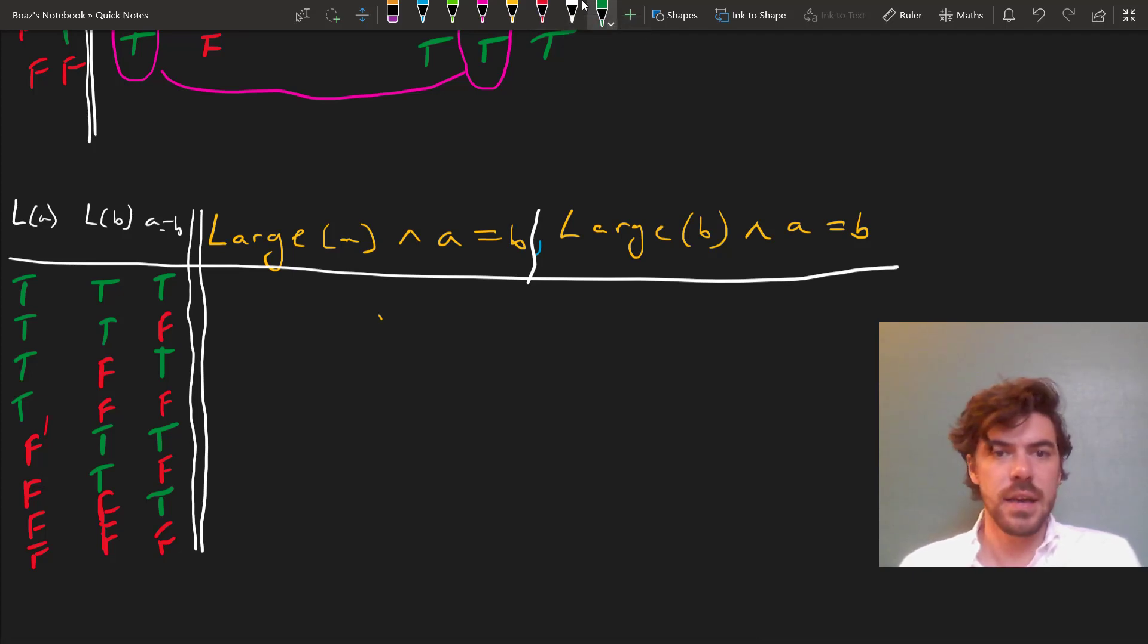Okay, let's assess these then. A equals B is true, and so is large A in the first row, so that comes out true. In the second row, it comes out false. In the third, true, and all the rest of them are false.